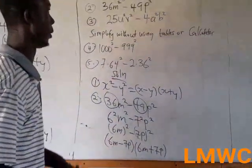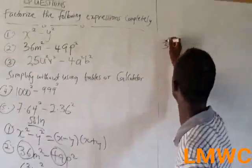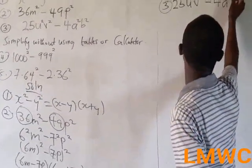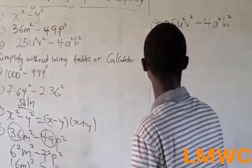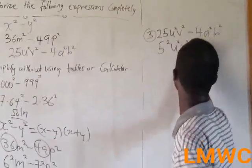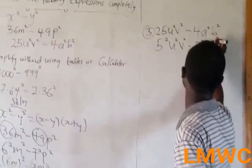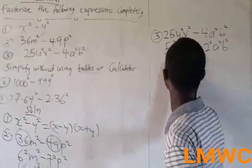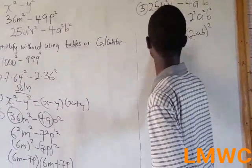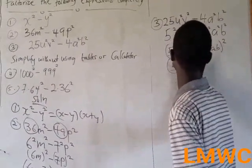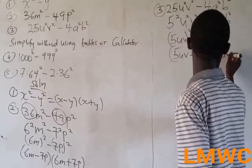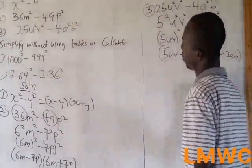Question 3: 25u squared v squared minus 4a squared b squared. We know 25 and 4 are perfect squares. Applying the difference of two squares, the factors become (5uv minus 2ab)(5uv plus 2ab).